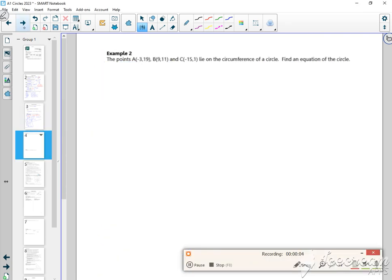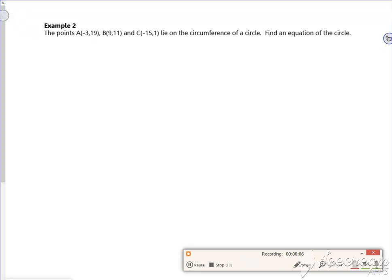Right then, are we ready? So we've got this next example. Example two says the points A, B, C lie on the circumference, find the equation.